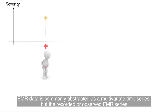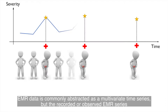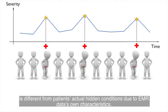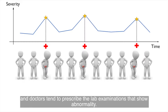EHR data is commonly abstracted as a multivariate time-series. But the recorded or observed EHR series is different from patients' actual hidden conditions due to EHR data's own characteristics. For example, patients tend to visit hospital more often when they feel sick, and doctors tend to prescribe lab examinations that show abnormality.